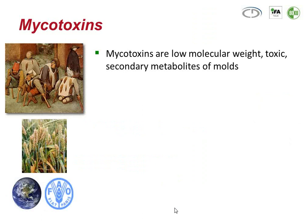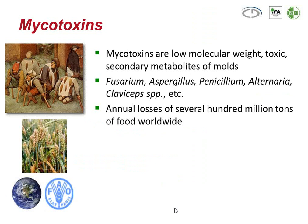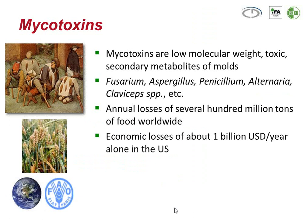As you probably all know, mycotoxins are secondary metabolites of molds, which are of low molecular weight and which are toxic to mammals, to humans and to animals alike. They are produced by a variety of filamentous fungi like Fusarium, Aspergillus, Penicillium and others. The occurrence of mycotoxins causes the loss of several hundred million tons of food and feed worldwide each year. And the economic losses directly arising from mycotoxins are in the range of one billion US dollars each year.